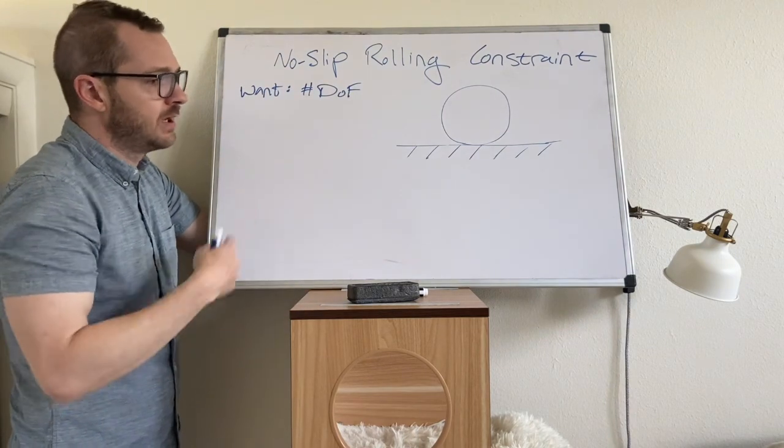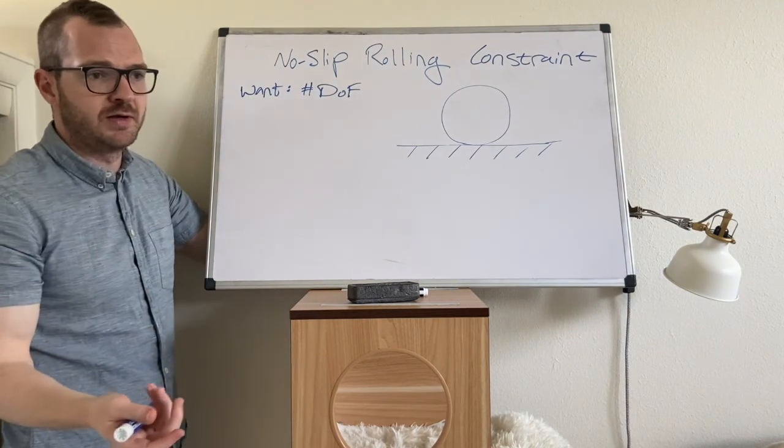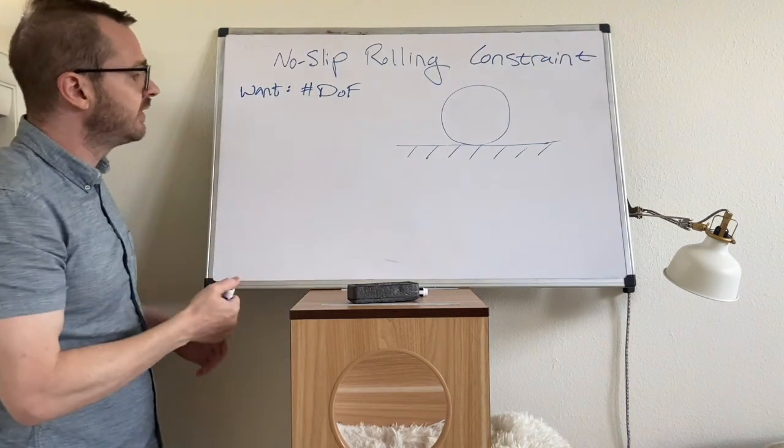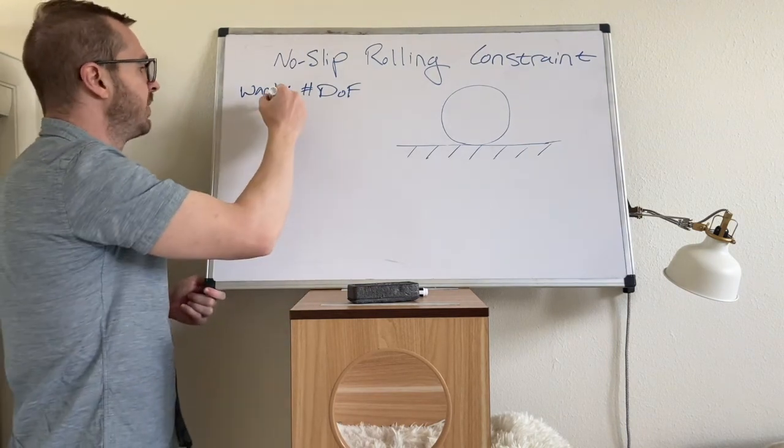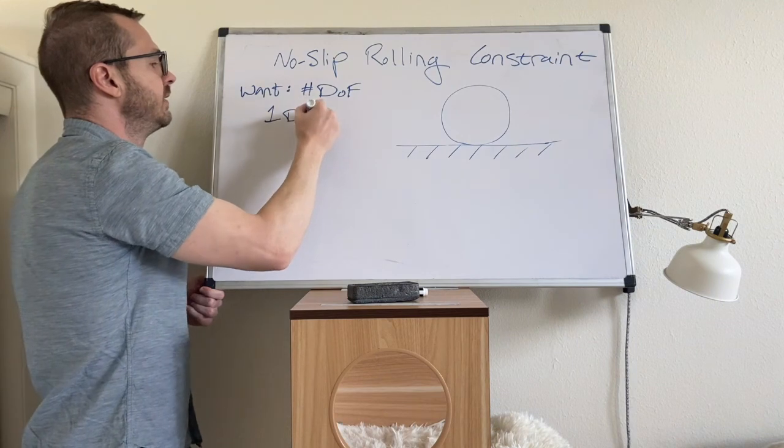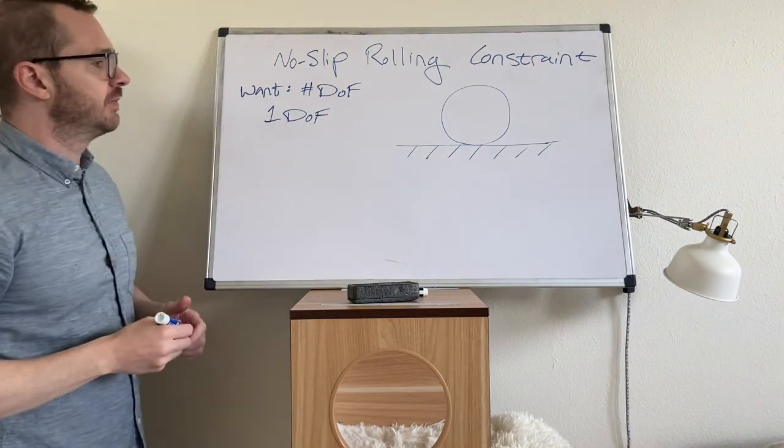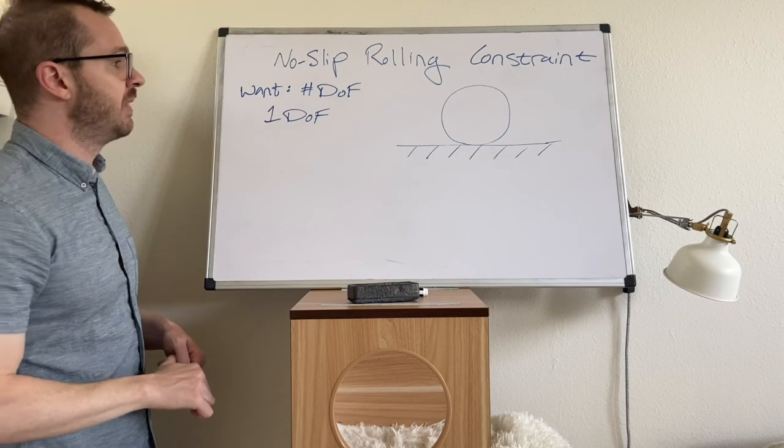Or in order to translate it, you have to rotate it. There is a connection between those. So just by intuition, we can say this problem has one degree of freedom, and we just have to back that up with some math.